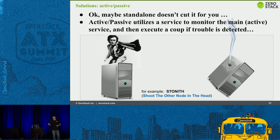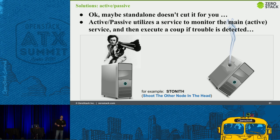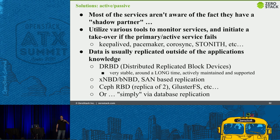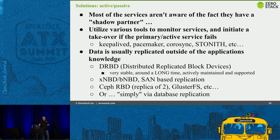Maybe I haven't convinced you standalone is the way to go — you want active-passive. There are a number of solutions. STONITH — represented here by Clint Eastwood — literally means 'shoot the other node in the head' and take over all the services. Most services aren't aware they have a shadow partner just waiting to take over. Technologies like STONITH, Pacemaker, Corosync, keepalived are used for implementing highly available solutions, and they have a lot of caveats.